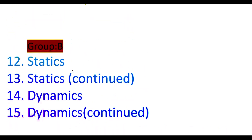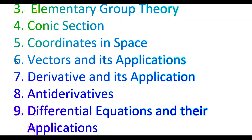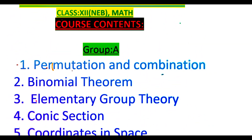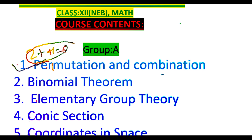The first topic of group A is permutation and combination, which is related to counting principle — the number of ways of selection and the number of ways of arrangement. From this topic, questions of 2 plus 4 equal to 6 marks will be asked in the examination.